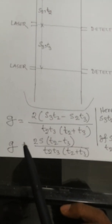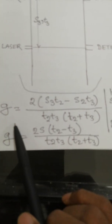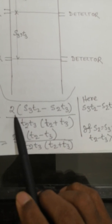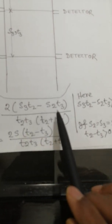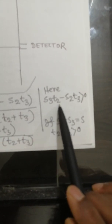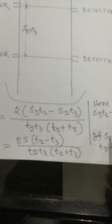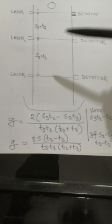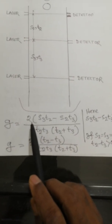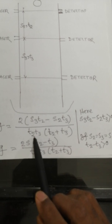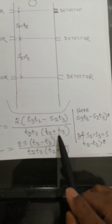we get the equation: g equals 2 into (S3·T2 minus S2·T3), where S3·T2 is greater than S2·T3, so the numerator is greater than 0. Using 3 detection points, g equals 2 times (S3 times T2 minus S2 times T3) divided by T2·T3 times (T2 plus T3).